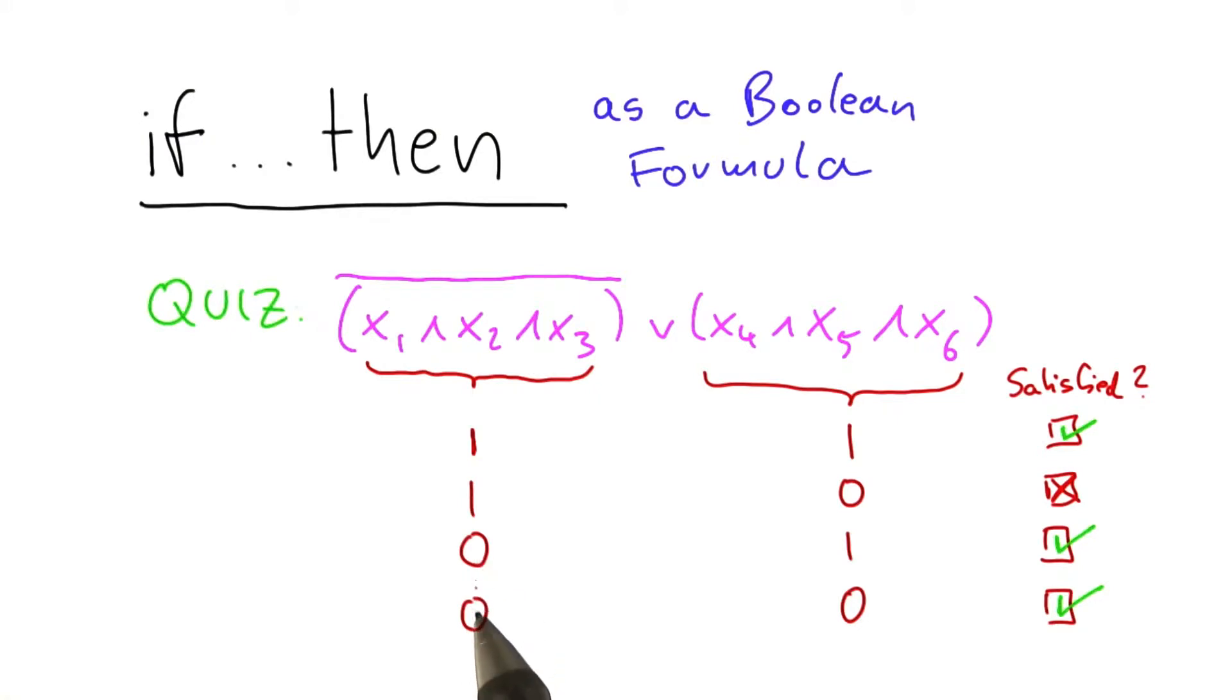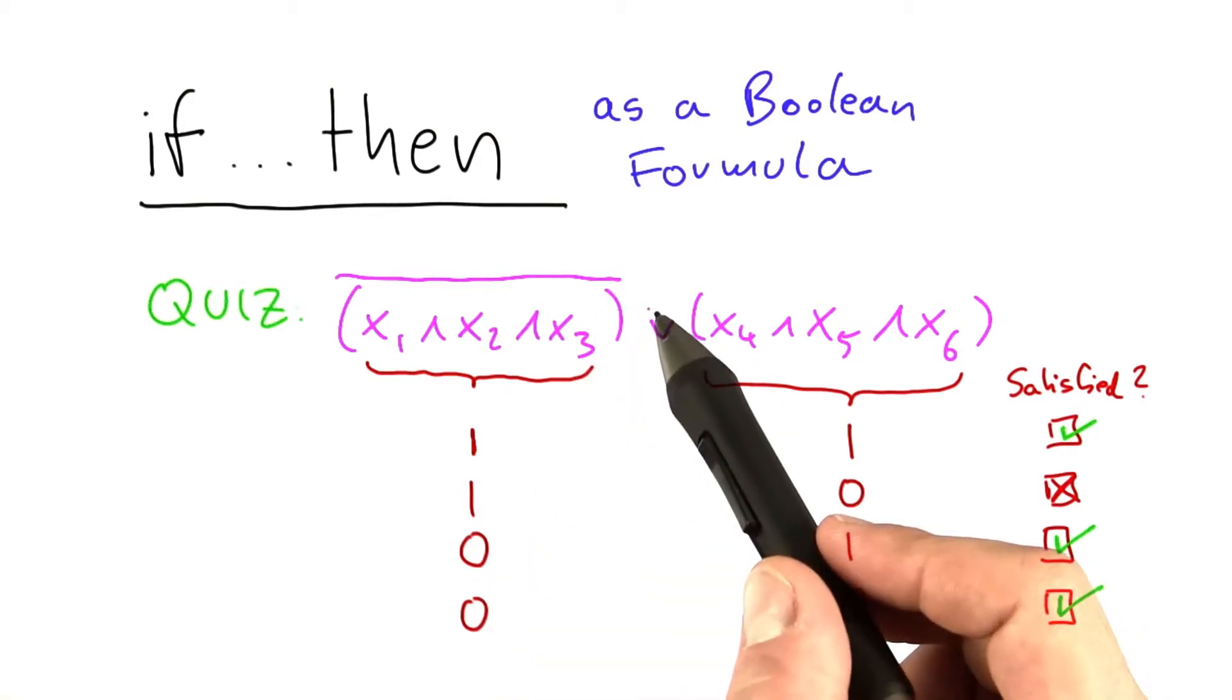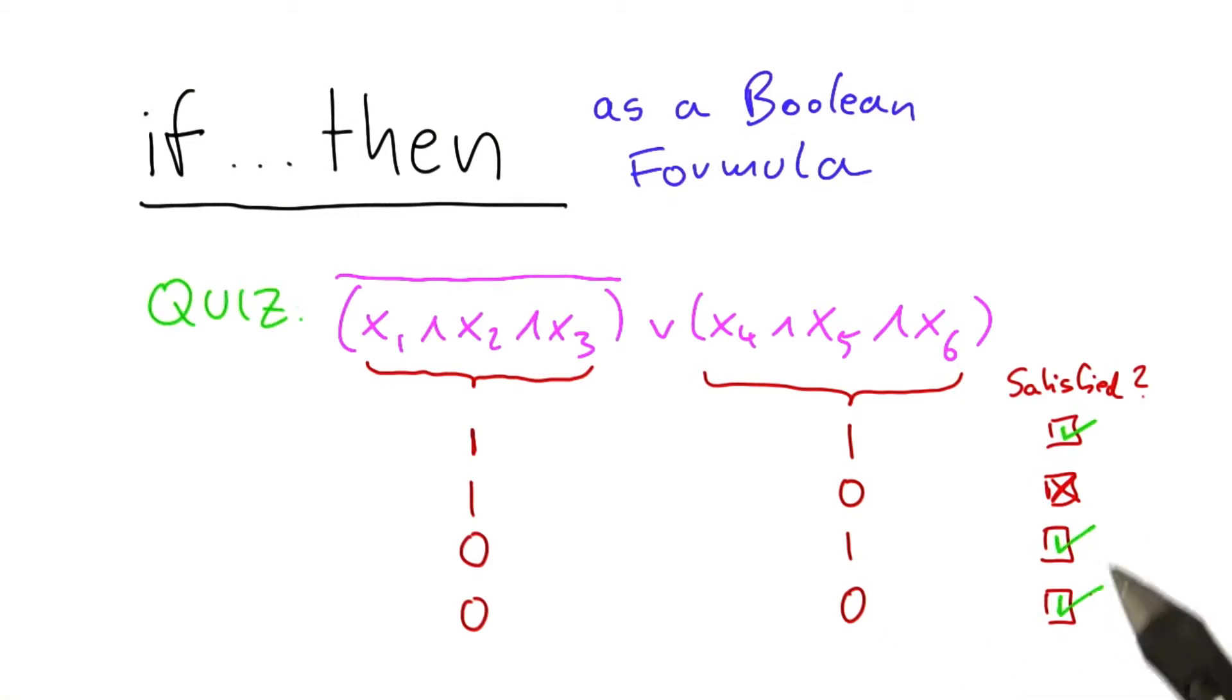And for these two cases, the Boolean formula is simply satisfied because if this goes to 0, then we have the big not over here. So it will go to 1 and 1 or 1 and 1 or 0. That also evaluates to 1.